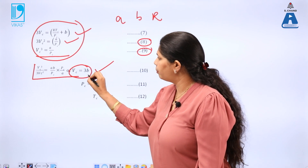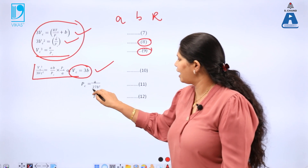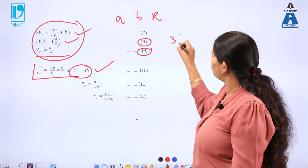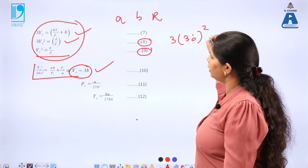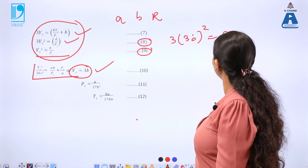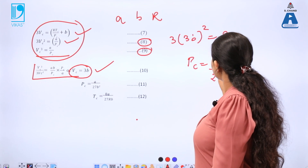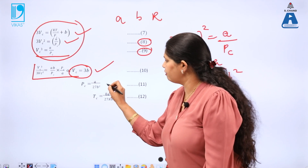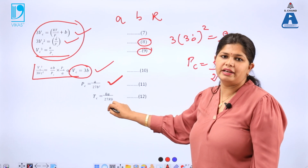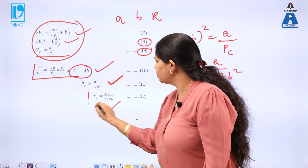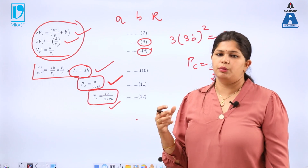Similarly, substituting Vc = 3B into equation 8, we find that 3(3B)² = A/Pc, giving Pc = A/(27B²). Once Pc and Vc are known, substituting into the first expression yields Tc = 8A/(27RB). These are the most important relationships between the critical constants Pc, Tc, Vc and the Van der Waals constants A and B.